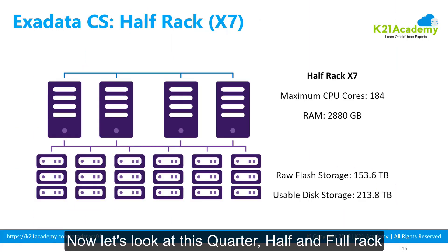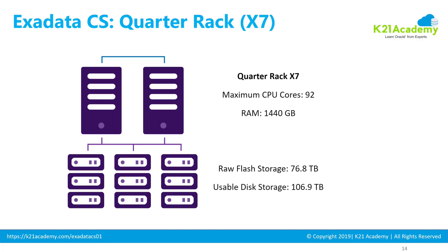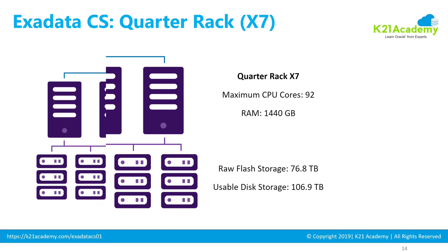Now let's look at quarter, half, and full rack — what do you get in each option? In the quarter rack, you get two DB system nodes and three storage servers. If you're picking the X7 model, these two nodes can have a maximum of up to 92 CPUs — 46 in each DB server. You can have RAM up to 1,440 GB, raw flash storage up to 76.8 terabytes, and usable disk space up to 106 terabytes.